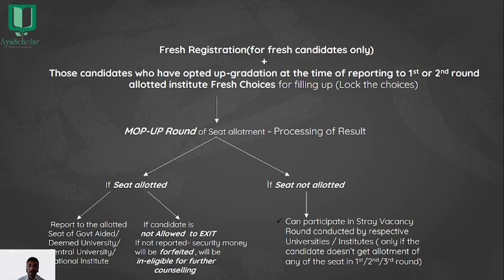If the candidate does not want to join the allotted seat, they cannot deny it — exit is not allowed. If not reported, the security money will be forfeited. So the candidate cannot exit from the mop-up round. Along with the forfeiture, the candidate is not allowed to continue in further counseling at the state level and loses eligibility for counseling. The second possibility: if the seat is not allotted, the candidate can participate in the stray vacancy round conducted by the respective universities or institutes. To take part in the stray vacancy round, the candidate must have attended any one of the first, second, or third rounds.